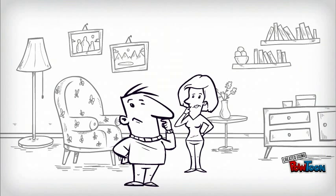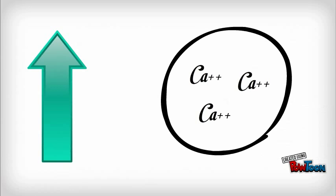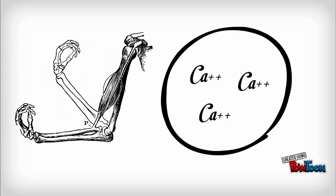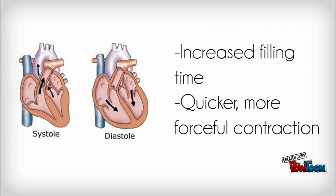You may be asking, how do they work? Cardiac glycosides work by causing an increase in intracellular calcium ions, a key component to muscle contraction. The end result is an increased filling time, known as diastole, and a quicker, more forceful contraction.